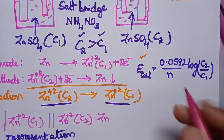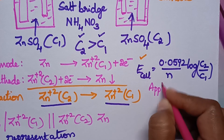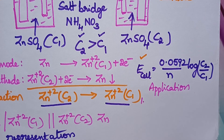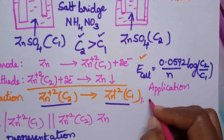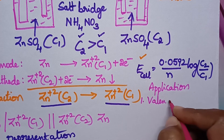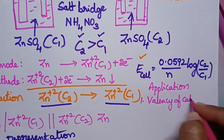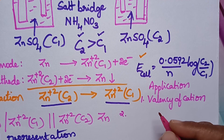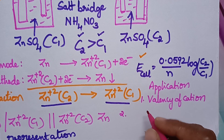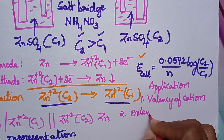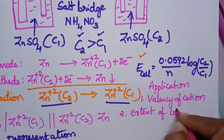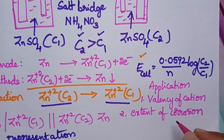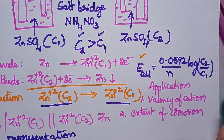Coming to the important applications of the concentration cell: it is highly useful for calculating the valency of the cation, and it is also highly useful to know the extent of corrosion. These are a few applications of the concentration cell.